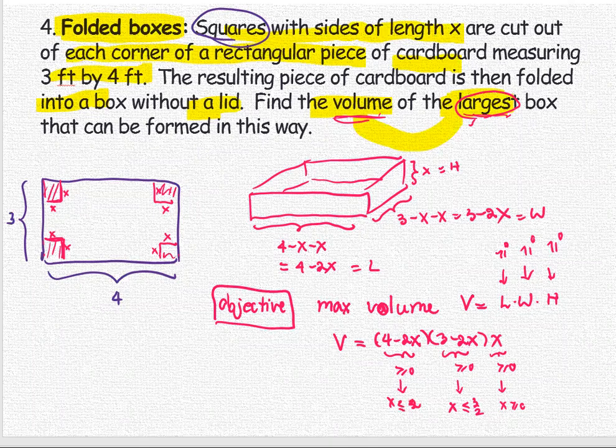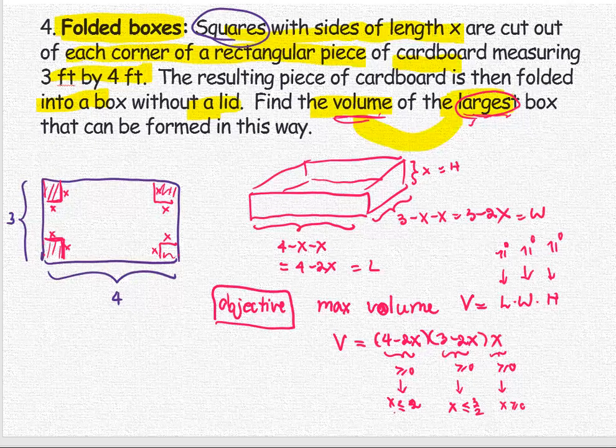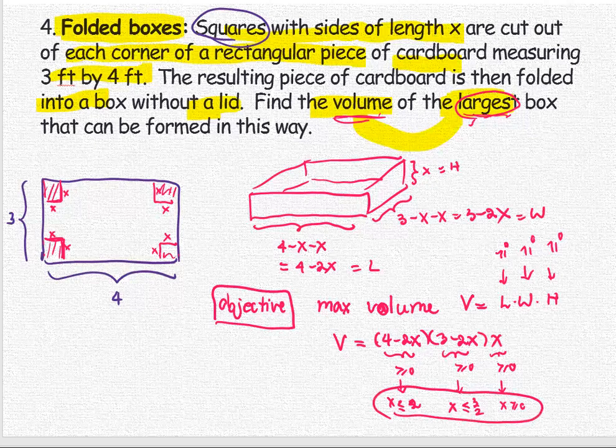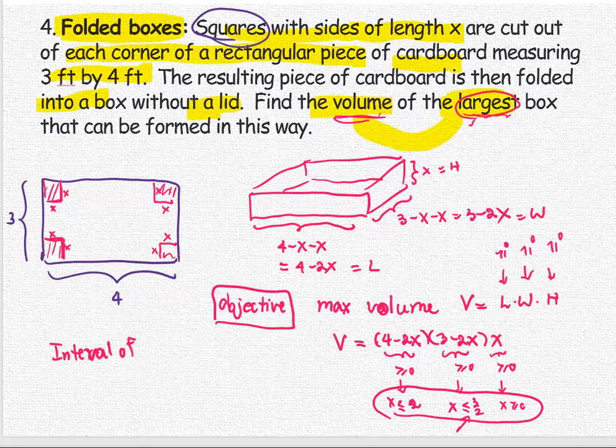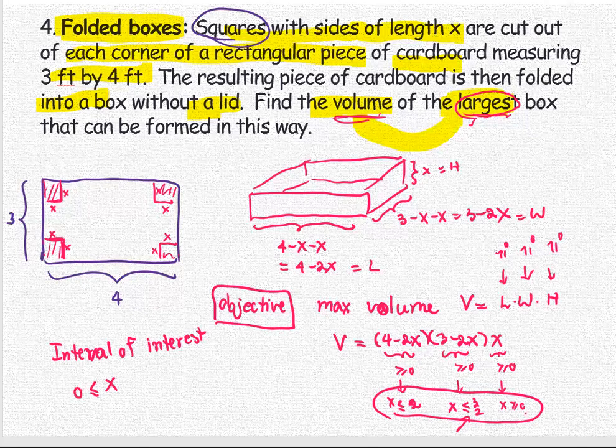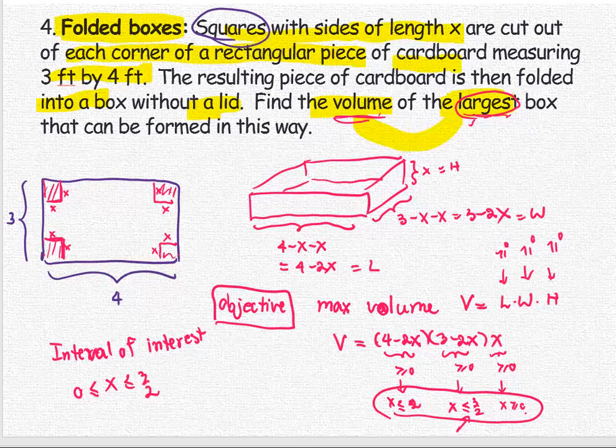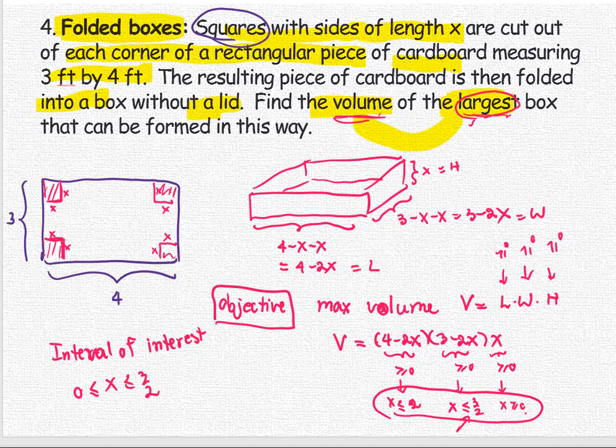With these three conditions combined, the common condition is x less than or equal to 3 over 2. So the interval of interest is x greater than or equal to zero, less than or equal to 3 over 2. If we use x greater than 1.5 but less than 2, you will not have enough room to make the width of the box. The maximum you can get for x would be half of the 3, or 3 over 2.